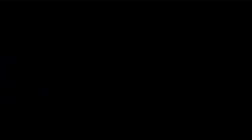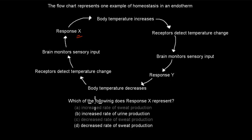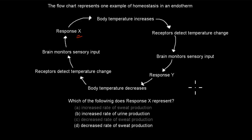The next question: The flow chart represents one example of homeostasis in an endotherm. Which of the following does response X represent? A. Increased rate of sweat production. B. Increased rate of urine production. C. Decreased rate of sweat production. D. Decreased rate of sweat production. Pause the video.